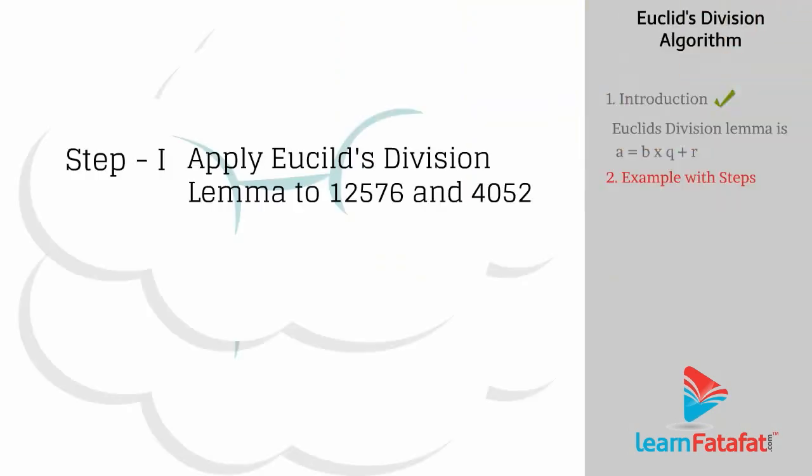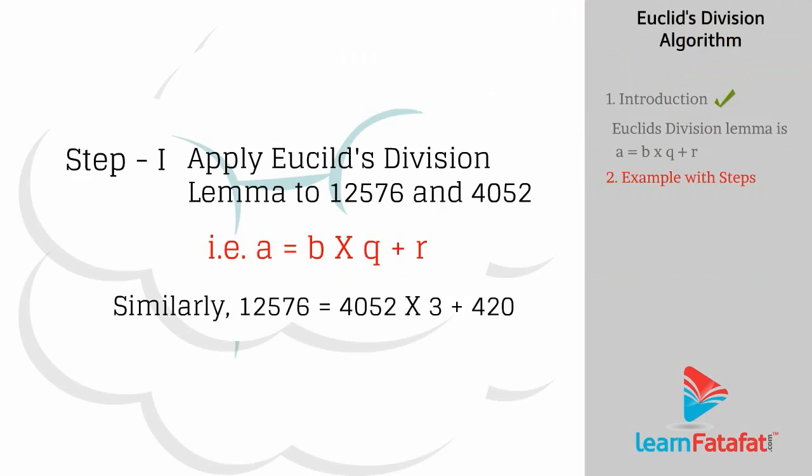Step 1 is to apply Euclid Division Lemma to 12576 and 4052. That is, 12576 is equal to 4052 multiplied by 3 plus 420, where 420 is the remainder of these two numbers.